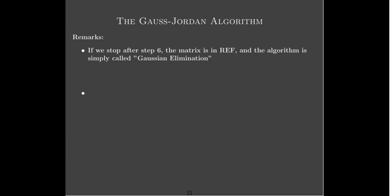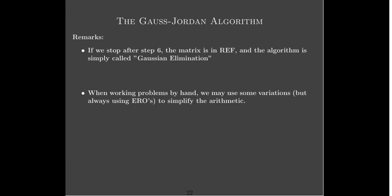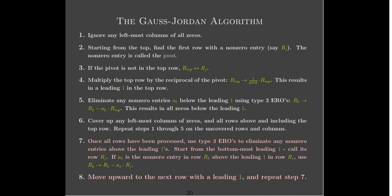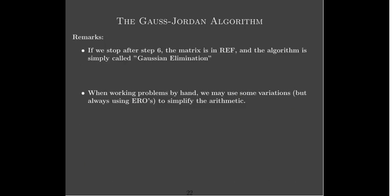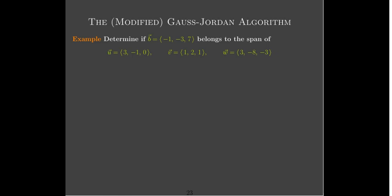Many times we will stop at row echelon form; other times we may want the reduced row echelon form. This is a great algorithm — very systematic and always gives you a solution, great for putting in a computer program. But when working problems by hand, we're going to try to avoid the step of multiplying a row by the reciprocal of the pivot, because that would lead to fractions.